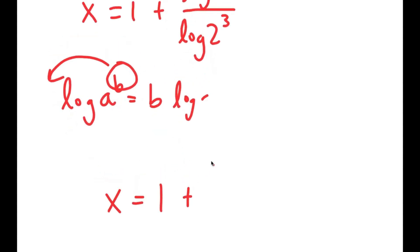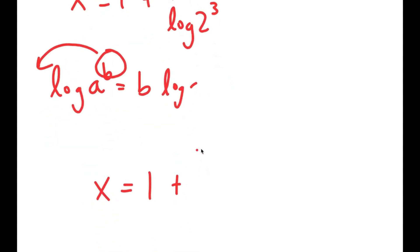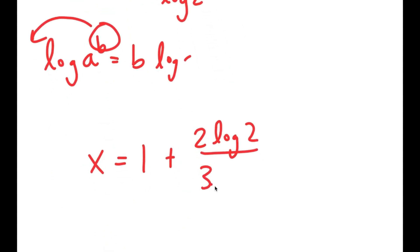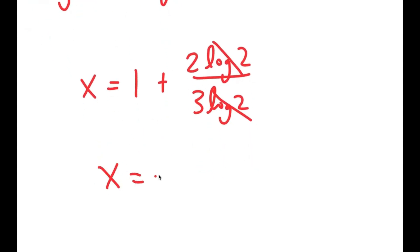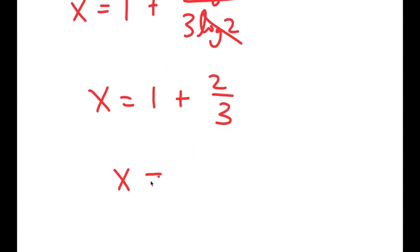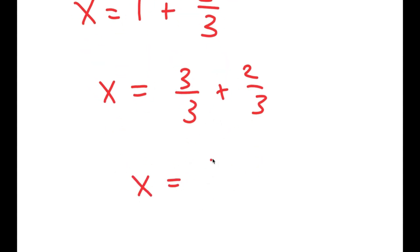So I get x is equal to 1 plus — I can move the 2 to the front — so 2 times log 2, over the same thing with 3, so 3 times log 2. These two cancel out, and I get x is equal to 1 plus 2 over 3, which is equal to — 1 is the same thing as 3 over 3 — so 3 over 3 plus 2 over 3, which is 5 over 3. So x is 5 over 3.